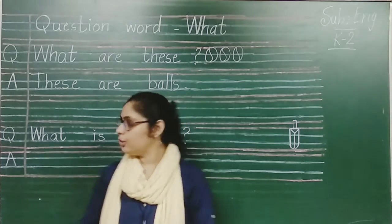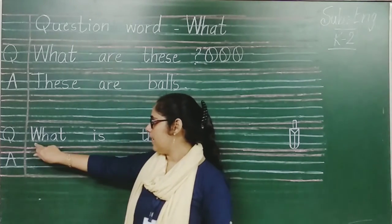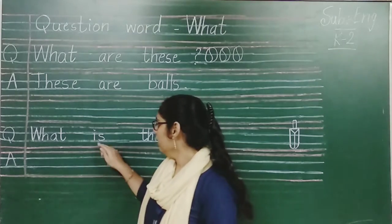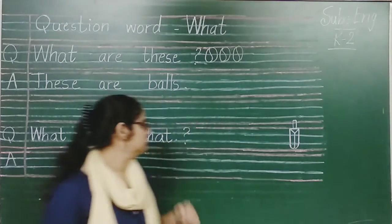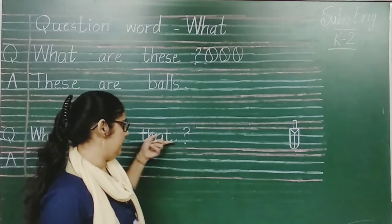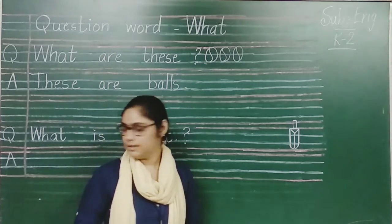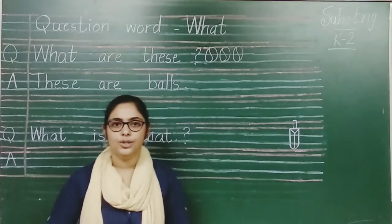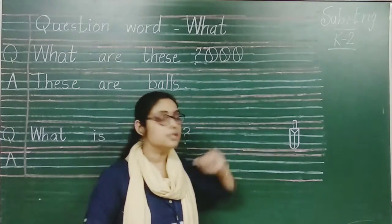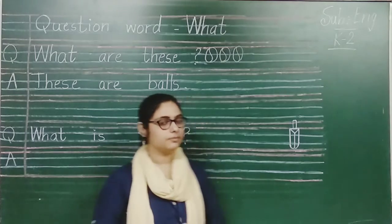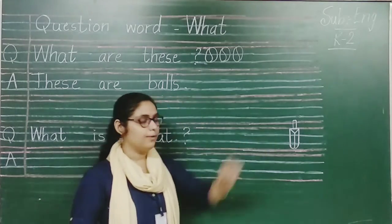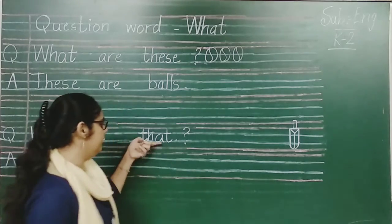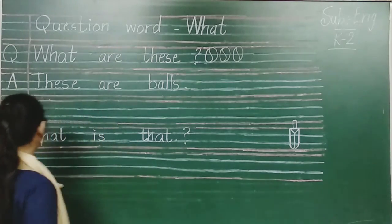Moving to next. What is that? What is that? Amhne is q use kia because object is singular. So that is far from us. That's why we have to use that.